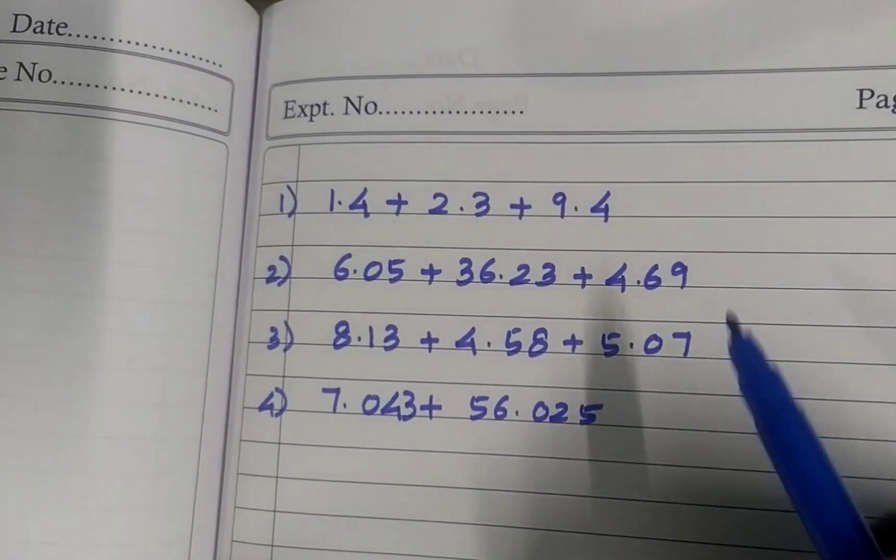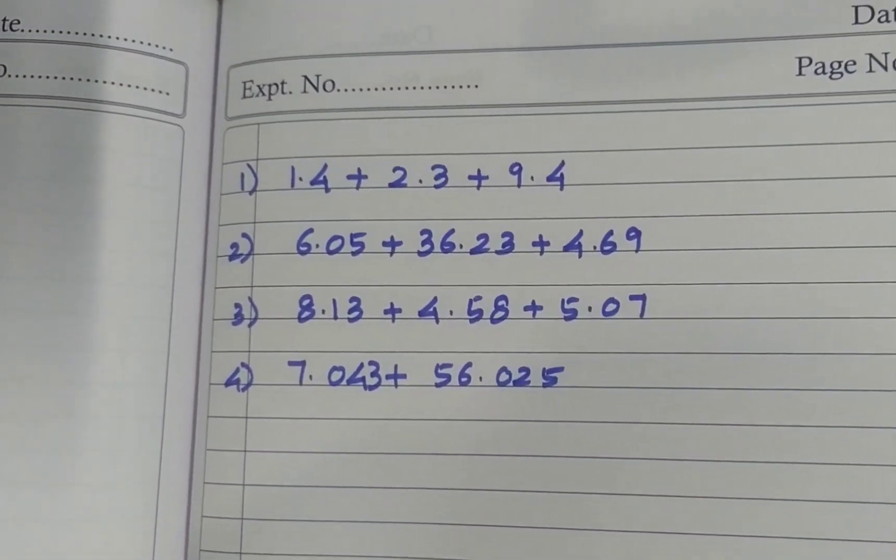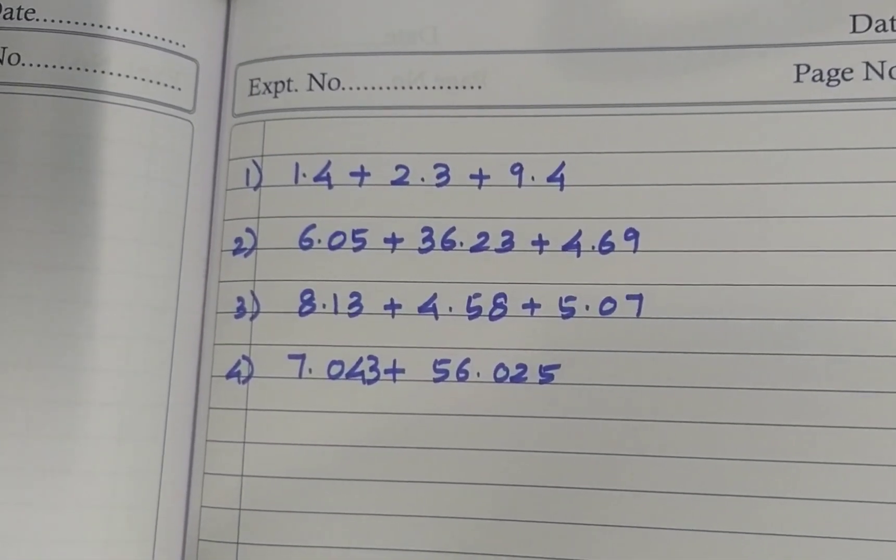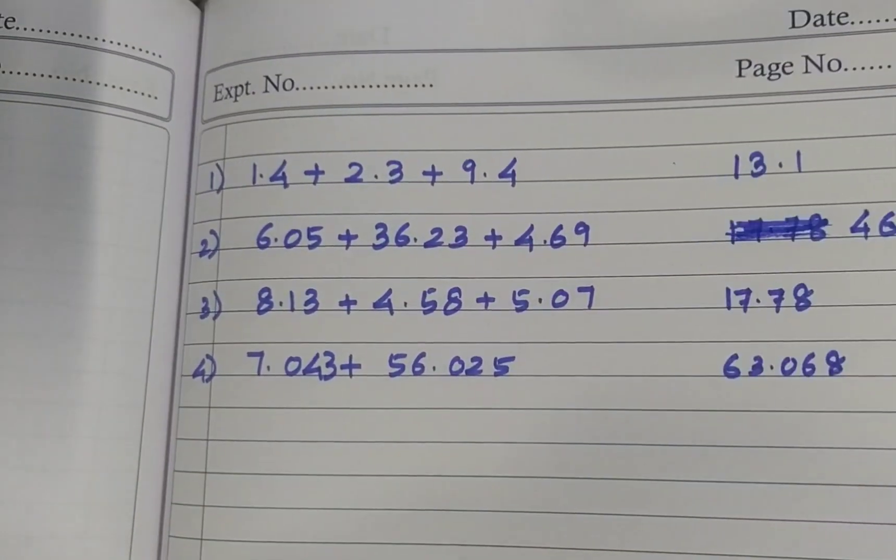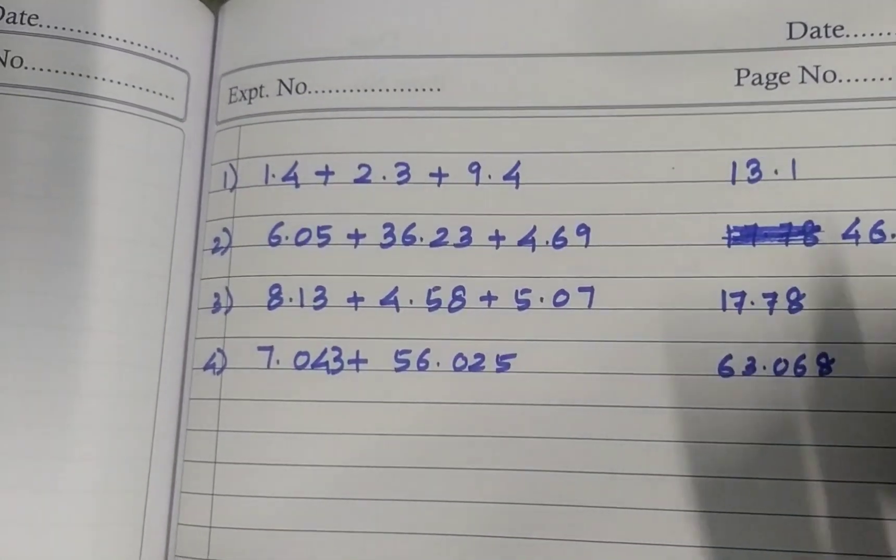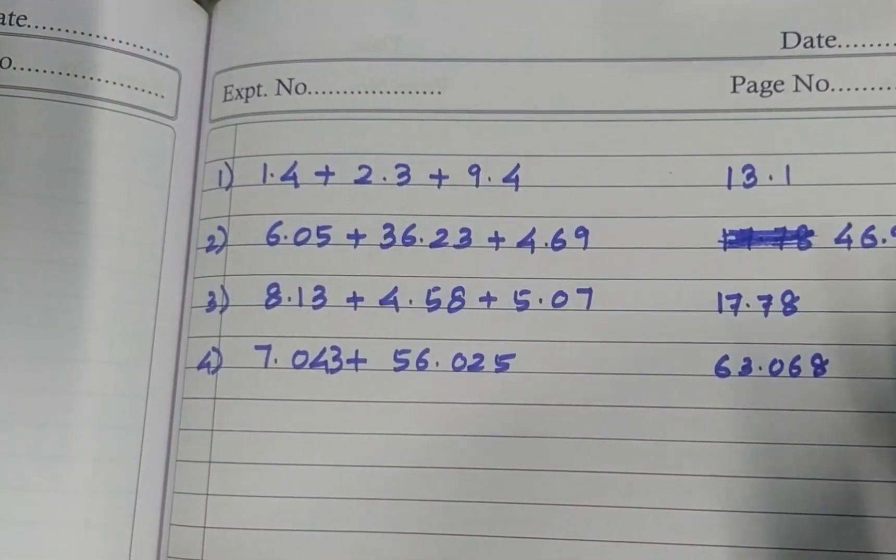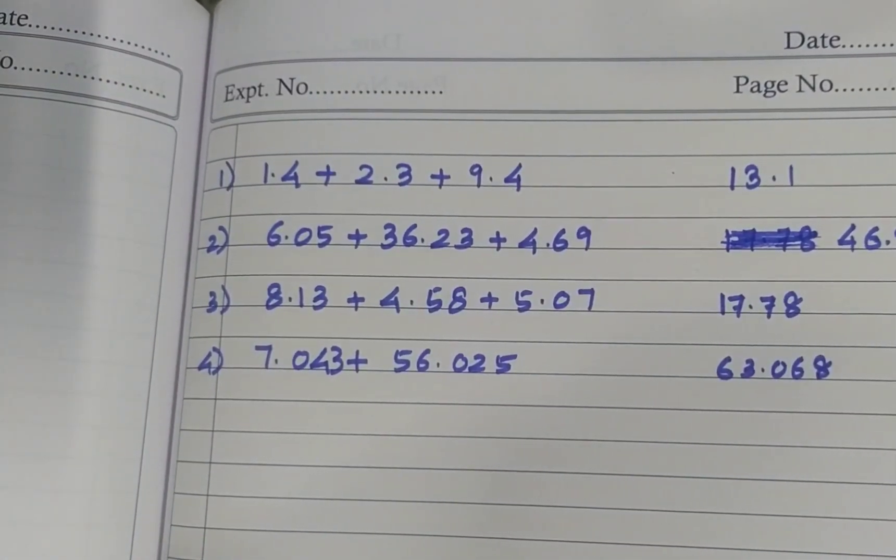Now try these sums. It's all actually addition of like decimals. So add and find the answer. Pause the video, do the sums, come back and check your answers. Now check your answers. If you got these answers, you understood this addition of like decimals.